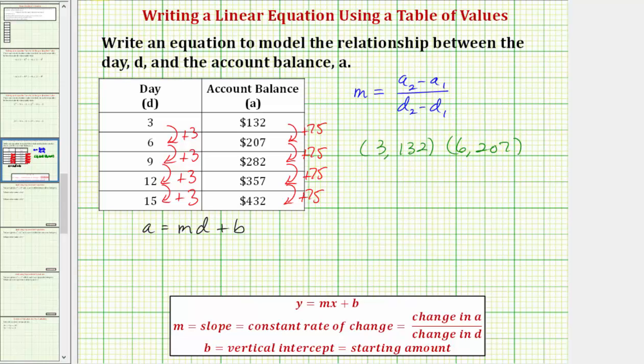So to keep things organized, we would call this D sub one and A sub one, and this D sub two and A sub two.